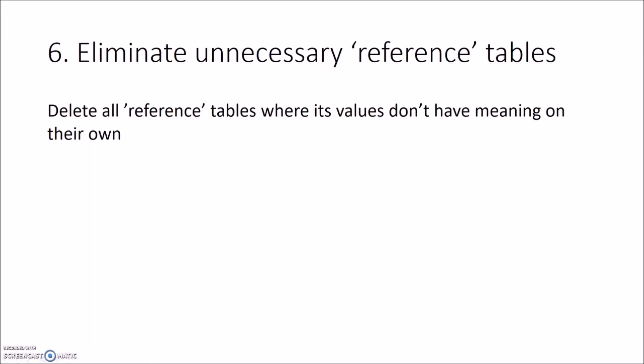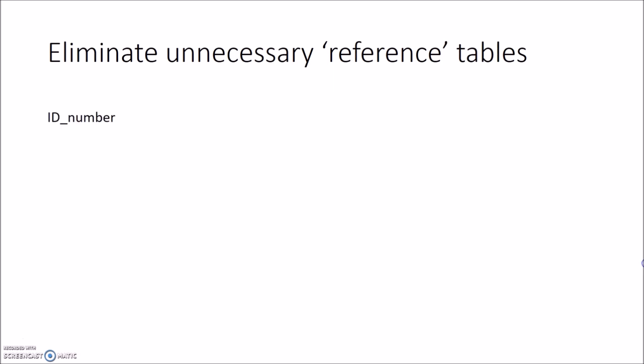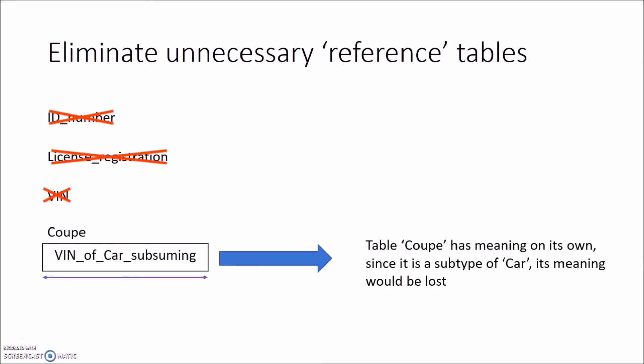In the sixth step, we eliminate unnecessary reference tables. These are tables where the values in them don't have meaning on their own. In our example, 'ID number' doesn't have any columns and is therefore obsolete. The same applies for 'license registration' and for 'VIN'. We also have 'coupé' — we cannot remove this table because it has meaning on its own; it derives from car and the meaning of a coupé would therefore be lost.